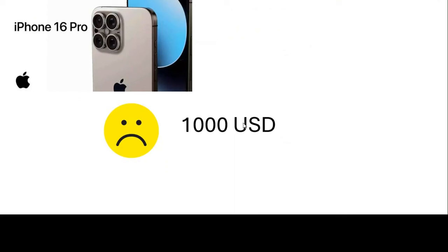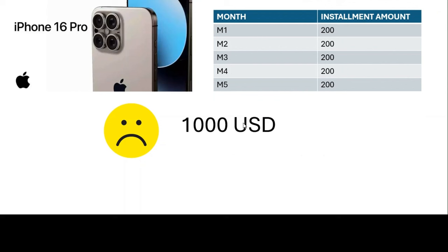Assume that you or your organization don't have the budget to spend that amount, so you become unhappy. But at the same time, the shopkeeper comes up with a plan — you can still buy the iPhone through a payment schedule. It's an installment plan: you take the iPhone 16 Pro home but don't pay the full $1,000. Instead, you agree to pay in five different installments — $200 each month for five months.